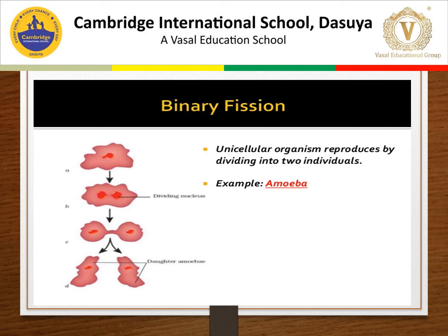In binary fission, a unicellular organism reproduces by dividing into two individuals. A parent organism splits into two small but identical daughter organisms. It occurs in unicellular organisms like amoeba, paramecium, leishmania, and bacteria. In amoeba, during unfavorable conditions, the nucleus divides into two followed by division of the cytoplasm, and thus a parent amoeba divides into two daughter amoebas.